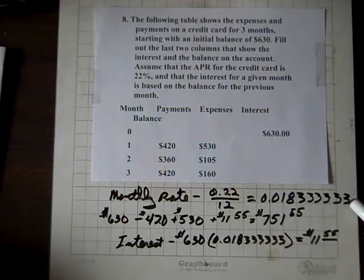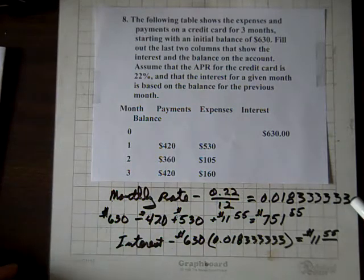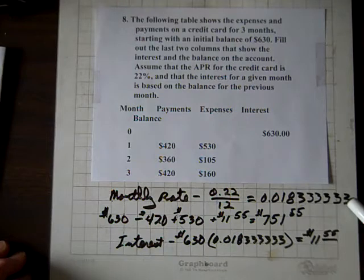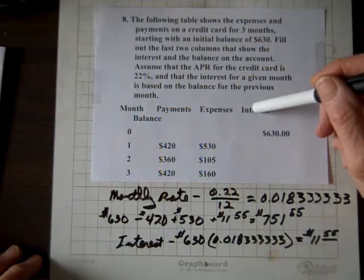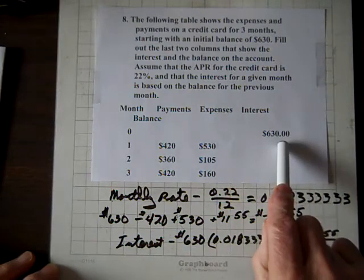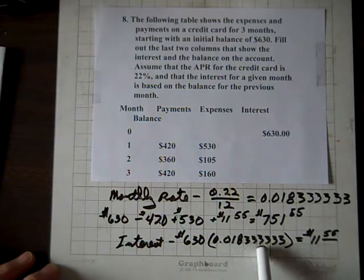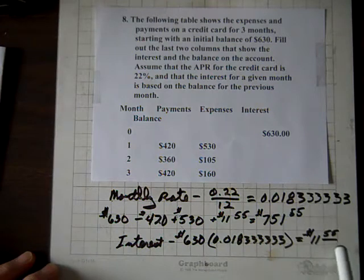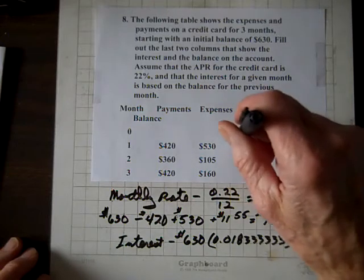Well, I carried these threes out. I repeated the threes six times to avoid a rounding error. You have to extend those out, otherwise you'll be off by a couple of cents because of a rounding error. So now, also, it says interest here. To compute the interest, you multiply the balance, whatever's in this column, times the interest rate, which is 0.018333333. And that gives us $11, and it rounds up to 55 cents. So that's our interest right here.